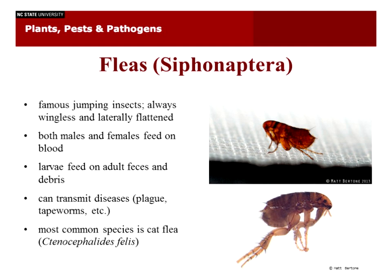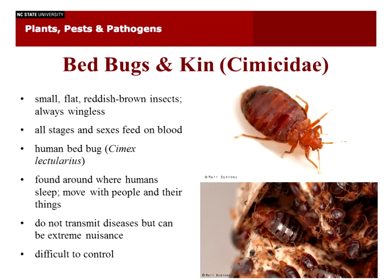The most common species we have is the cat flea, Ctenocephalides felis. There is Ctenocephalides canis, the dog flea, and the human flea is Pulex irritans, but it's not very common. The cat flea is really the most common flea you're going to have around domestic situations. Having pets is much more likely to lead to incidents of fleas.